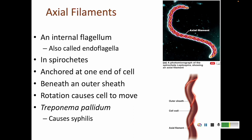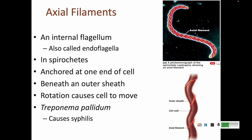Axial filaments are internal flagella inside of a cell, sometimes called endoflagella. They wrap around and around the cell. Axial filaments are located in spirochetes — the difference between a spirochete and a spirillum is that a spirochete has an axial filament while a spirillum has flagella on the outside. The axial filament twists like a corkscrew to allow the cell to move. One type of spirochete that uses axial filaments is Treponema pallidum, the bacterium that causes syphilis.